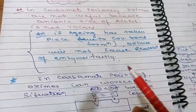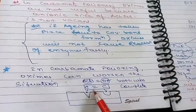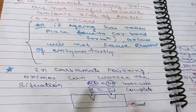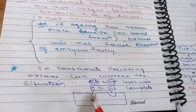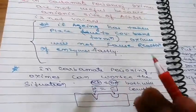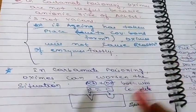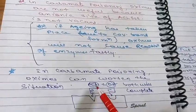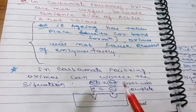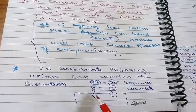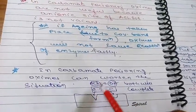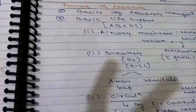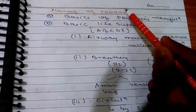An important point: in carbamate poisoning, oximes can worsen the situation and should not be used. The reason is that if the carbamate is somehow removed from the anionic site, oximes will bind there and prevent acetylcholine from binding — reducing acetylcholinesterase activity. So do not use oximes in carbamate poisoning.